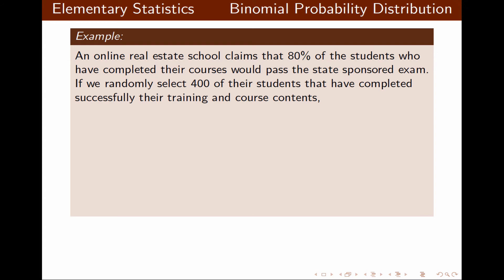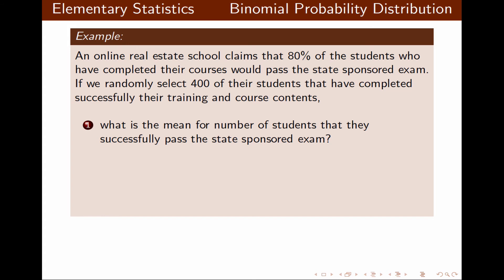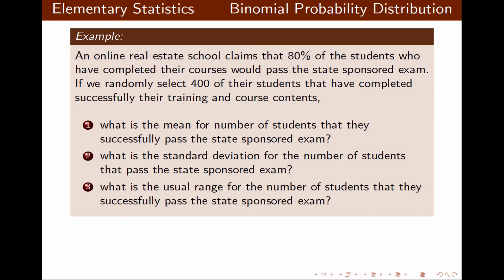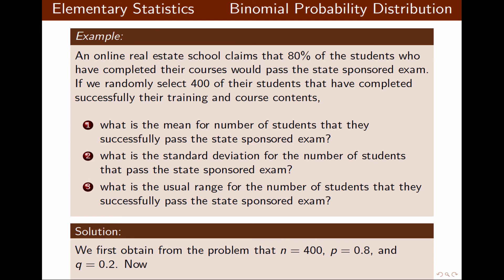In this example, an online real estate school claims that 80% of students who have completed their courses would pass the state-sponsored exams. If we randomly select 400 of their students who have completed their training and course content, we want to find the mean, standard deviation, and usual range for the number of students that pass the state-sponsored exam. From the problem: n equals 400, P equals 0.8, and Q equals 0.2.